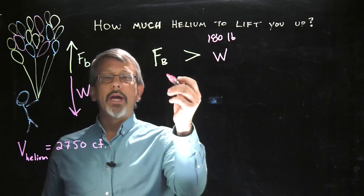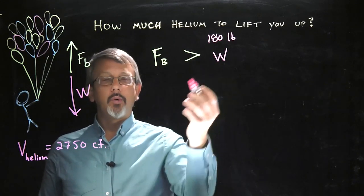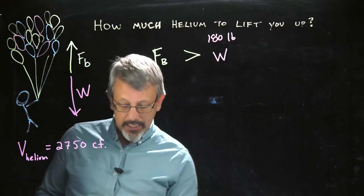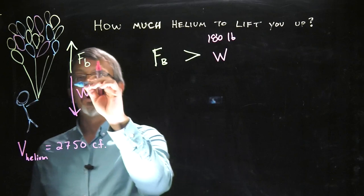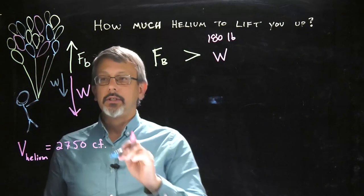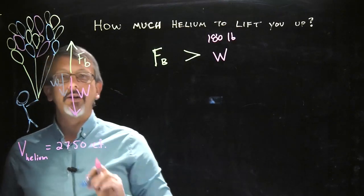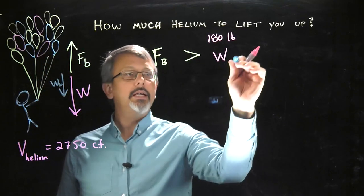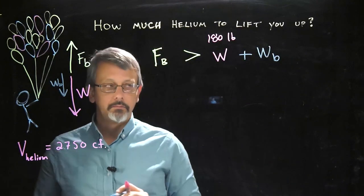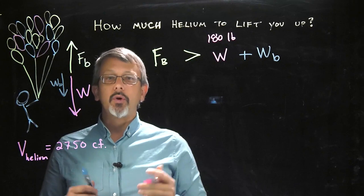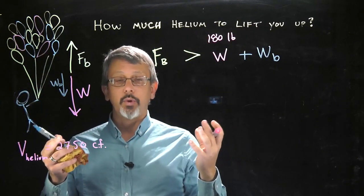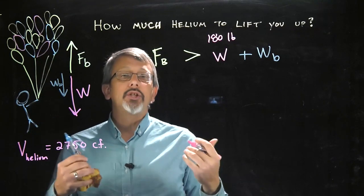So we started with our original equation, this buoyancy equation. And now what we also want to do in this particular case is take into account that we have an additional weight that we need to account for. The weight of the balloons themselves, which acts in a downward fashion. So maybe I'll abbreviate that Wb. So now we actually have to include the weight of our balloons in our equation. But notice the weight of the balloons will depend on the volume of the balloons necessary to fill them up. So we'll need to know some measurements for the balloon.